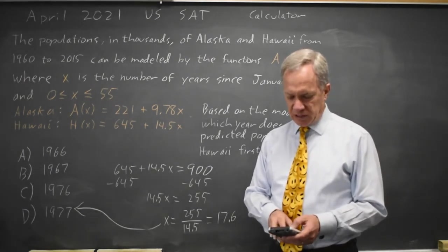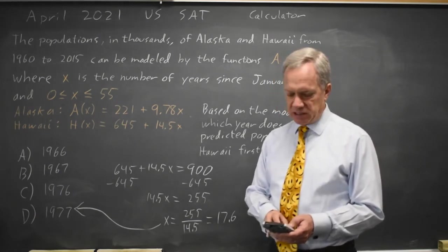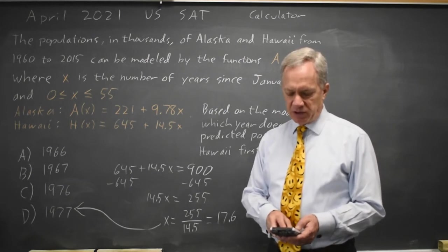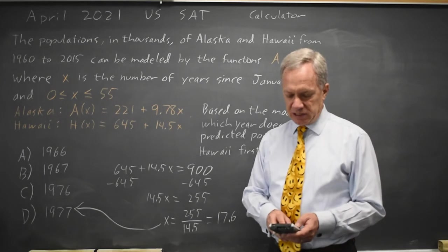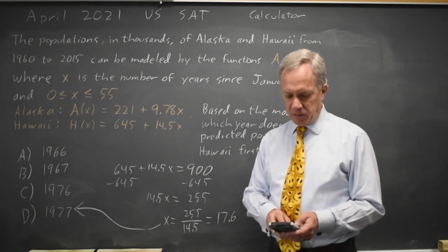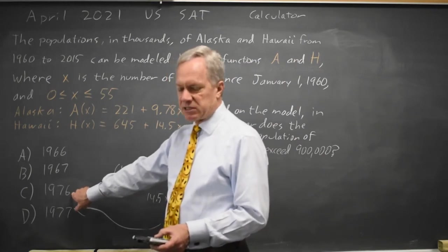We find in year 6, so that's 1966, our population is 732,000. Year 7, 746. 1976 is year 16. X equals 16 is 877,000.